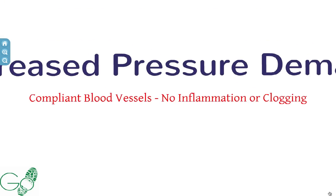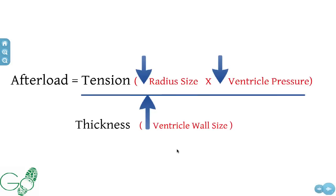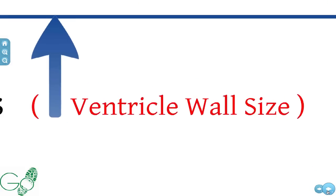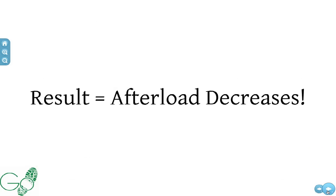Applying the equation — afterload equals (radius × ventricular pressure) divided by thickness — this person has a decreased radius, decreased ventricular pressure, but an overall net increase in wall thickness. A smaller numerator divided by a larger denominator yields a smaller result. For example, one times one divided by two equals one-half, compared to the previous example's larger value, resulting in an afterload decrease.